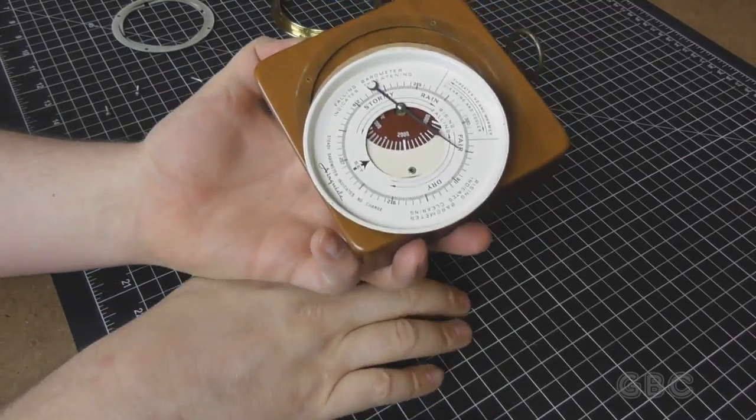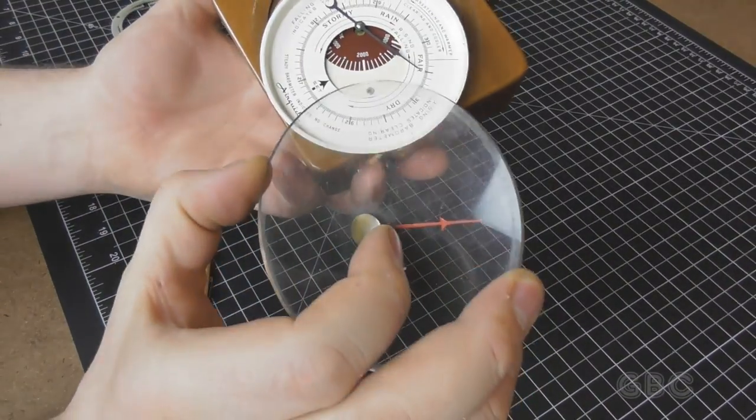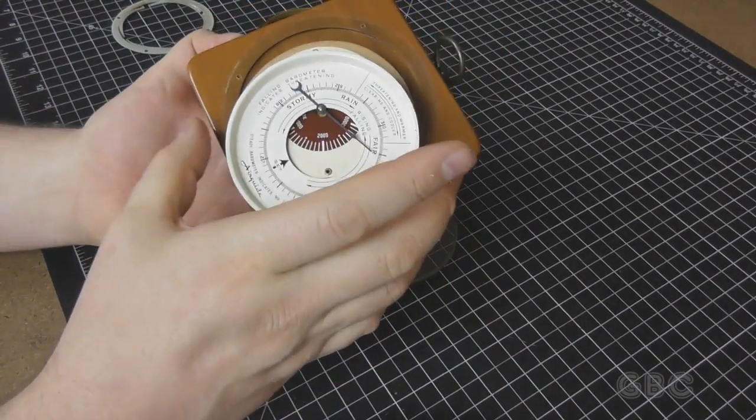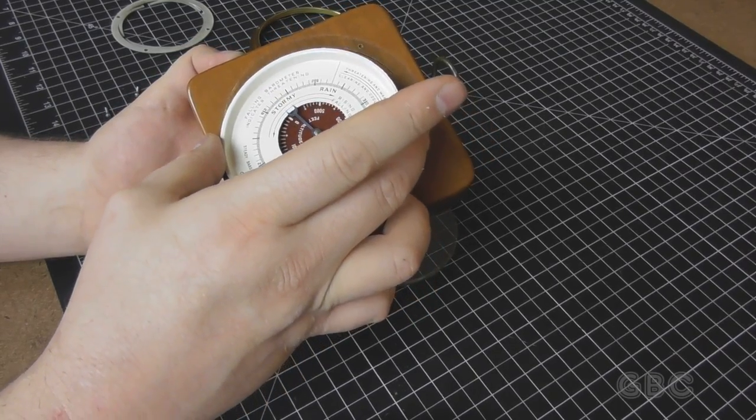Alright, I got the glass off and the trim ring. The glass holds the red dial that you would set to line up with the black dial. Now, if I'm very careful, I can get this faceplate off.